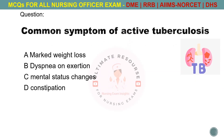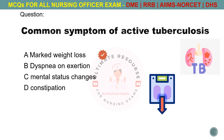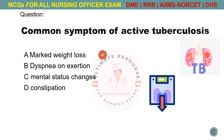Common symptom of active tuberculosis. Options are A. Marked weight loss, B. Dyspnea on exertion, C. Mental status changes, D. Constipation. The answer is A. Marked weight loss.